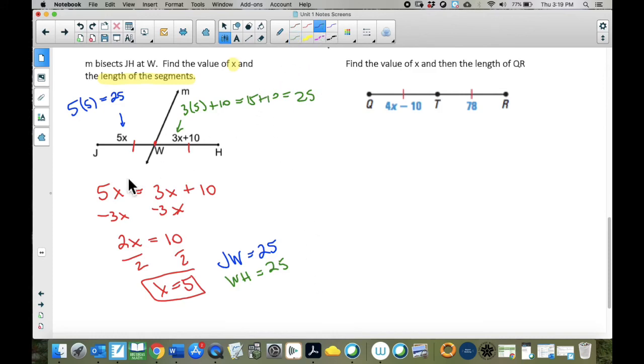Lastly, can we find how long is JH? Well, there's a couple ways to do that, but the easiest way to do it is this is 25, and this is 25. So JH is 25 plus 25, which is 50.